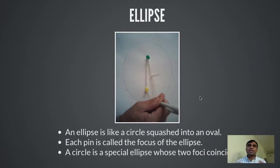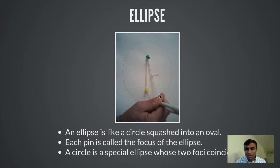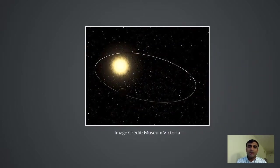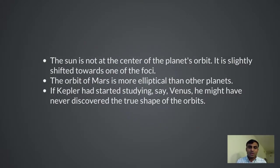An ellipse is essentially like a circle that has been squished into an oval. There are two foci in an ellipse — points where the sum of distances A and B is constant. A circle is essentially a special case of an ellipse where the two foci coincide into a single point. Kepler's first law was this: planets go around the sun not in circular orbits but in elliptical orbits, and the sun is not at the center but at one of the foci of the ellipse. In 3D, planet Mars goes around the sun, and at some points it is farther from the sun and at some points nearer.